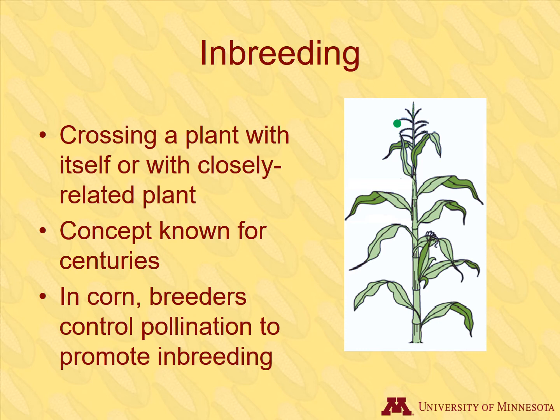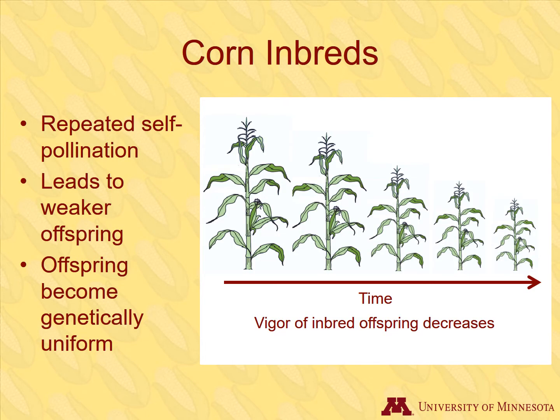A second important concept is inbreeding — crossing a plant with itself or with a closely related plant. The concept is familiar to early plant breeders and usually thought of as detrimental. Breeders can control the pollination process so that corn plants inbreed. When corn is self-pollinated or inbred, it has significant consequences in the resulting offspring. If you repeatedly self-pollinate successive generations of corn, each successive generation will get weaker and weaker. After a certain point, there is no further decline because the offspring have become genetically identical and will breed true, meaning breeding results are predictable. These genetically uniform plants are called inbreds.